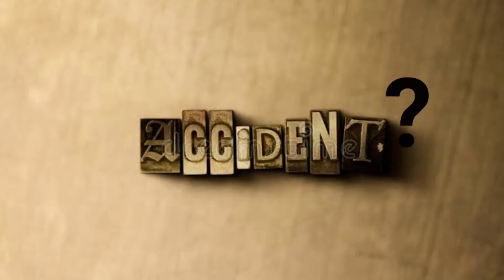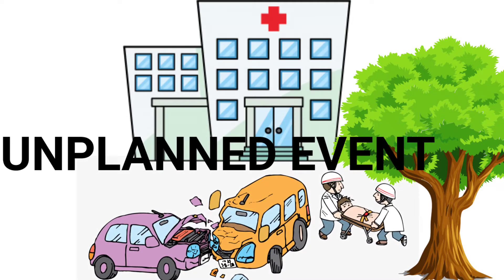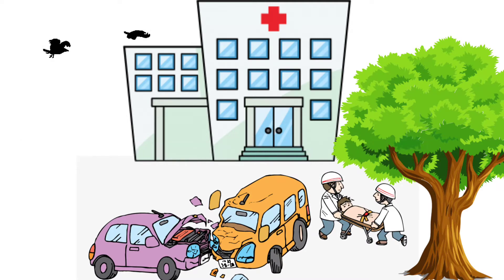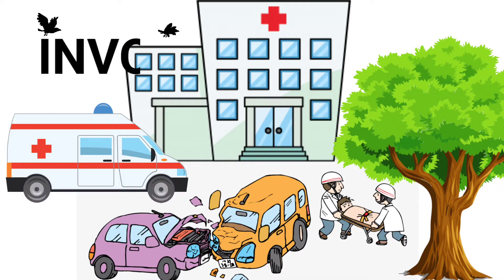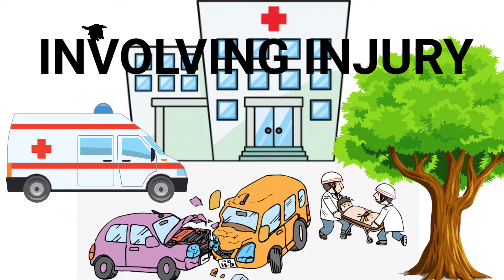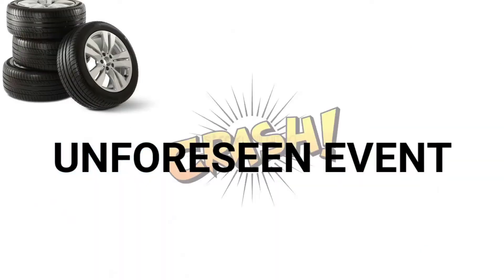What is an accident? An accident is an unplanned event — an unplanned incident involving injury or fatality. It is a series of events culminating in an unplanned and unforeseen outcome.